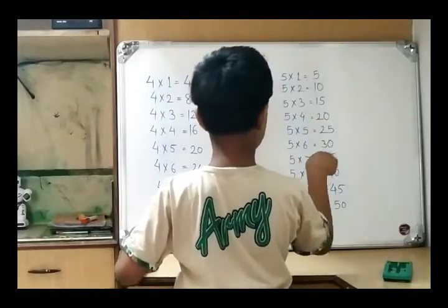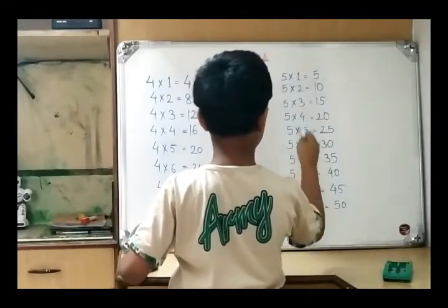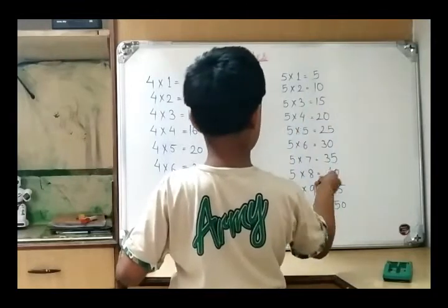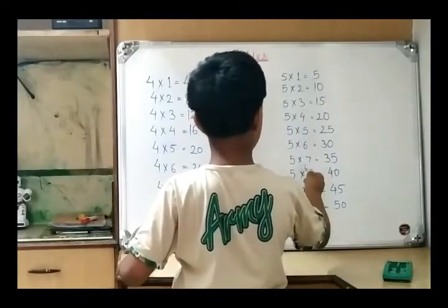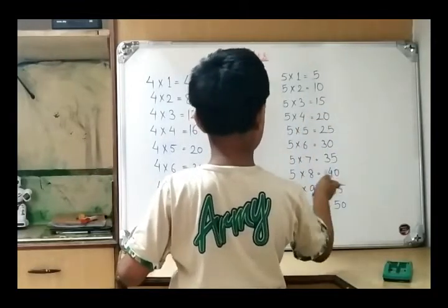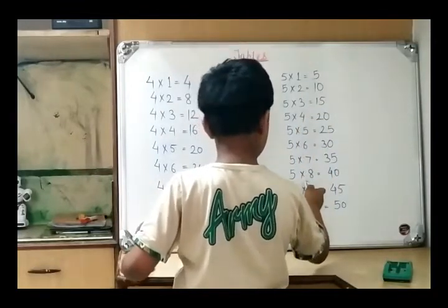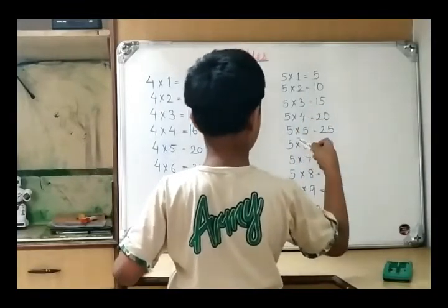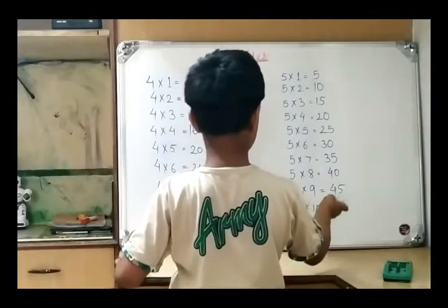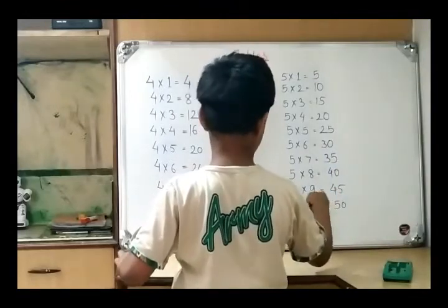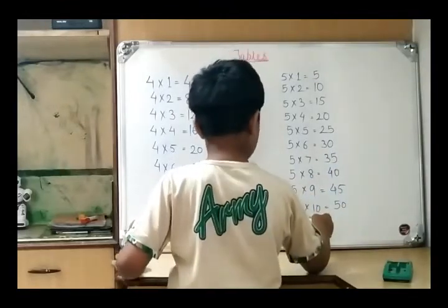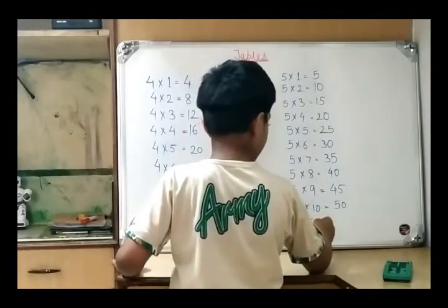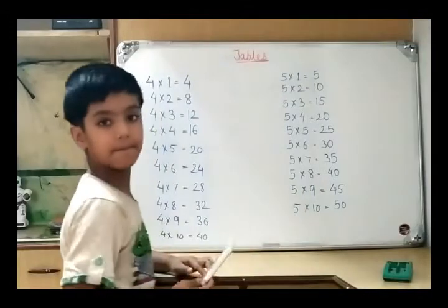5 6s are 30, 5 7s are 35, 5 8s are 40, 5 9s are 45, 5 10s are 50.